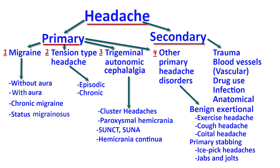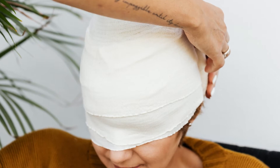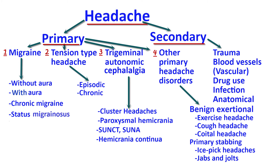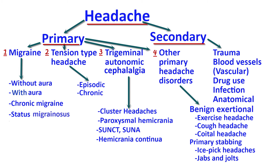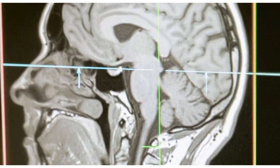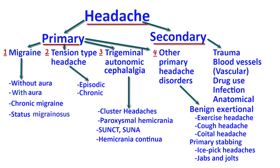Secondary headaches are due to underlying illness. Trauma can lead to secondary headaches, as can diseases of the blood vessels such as vasculitis, stroke from vessel blockage, or bleeding into the brain from vessel rupture. Drug withdrawal — including caffeine withdrawal — can cause headaches. Infection such as meningitis causes pain from infection in the lining of the brain. Anatomical structures can also lead to headaches, such as chronic sinusitis, dental problems, or eye strain.